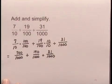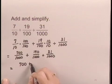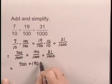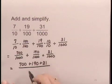Now that we have a common denominator in each of the three fractions, we can add the numerators: 700 plus 190 plus 31, all over the common denominator, 1,000.